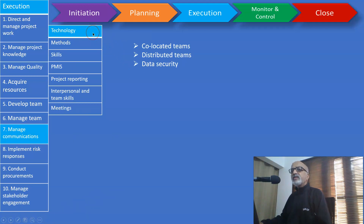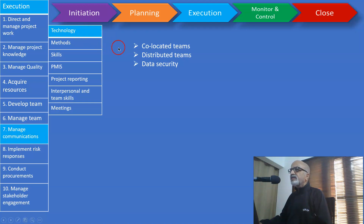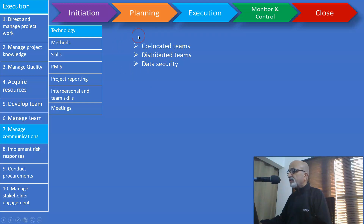Communication technology selection is very important for effective communication. Factors deciding on technology selection include whether the team is co-located or distributed, data security, access rights, and of course cost. All these parameters will impact your technology selection for communication.